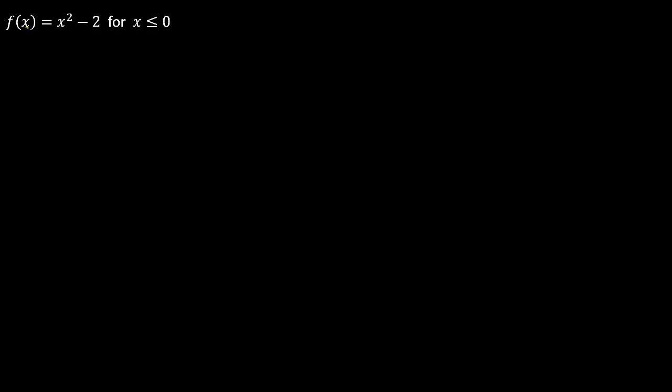Alright, so we've got f(x) = x² - 2 for x ≤ 0. Now, before I get started, I want to talk just a little bit about this part right here, this condition.